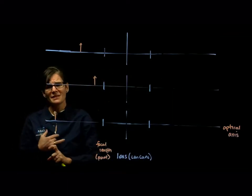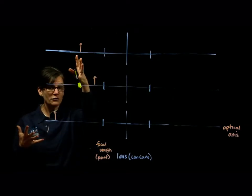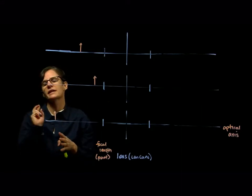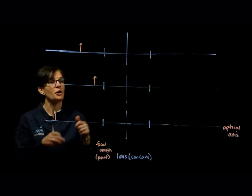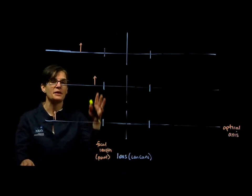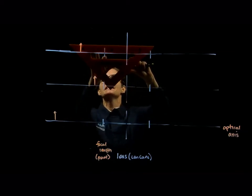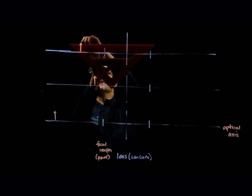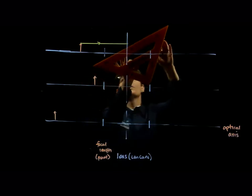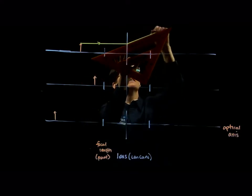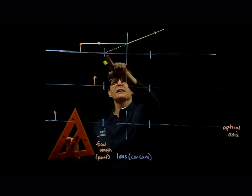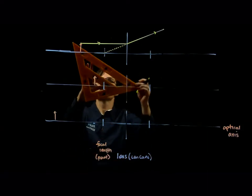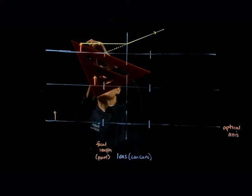Remember, a light source emits light from itself in all directions and in straight lines. Although we're only looking at a couple of rays to draw our images, we want to keep in mind that there's an infinite number of rays happening and they're all refracting in the same way, generating the same location for our image. Parallel rays of light — rays that are parallel to the optical axis — will refract along the line of the near focal point.